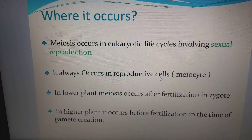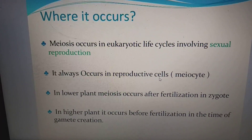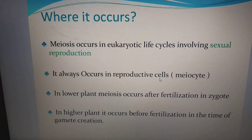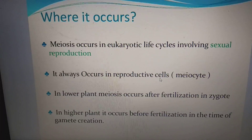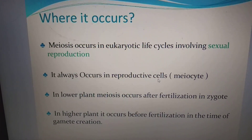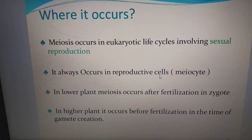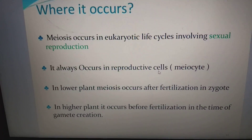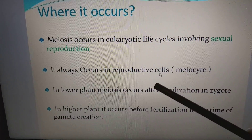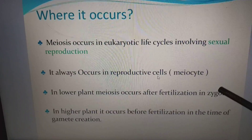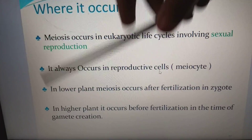Meiosis occurs in eukaryotic life cycles involving sexual reproduction, and it always occurs in reproductive cells, which we call meiocytes. In lower plants, meiosis occurs after fertilization in the zygote for the formation of spores. In higher plants, meiosis occurs before fertilization at the time of gamete formation. That is the difference between lower plants and higher plants.